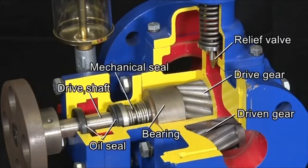Shown here are the main parts of the gear pump: the drive shaft, drive gear, driven gear, bearing, mechanical seal, oil seal and relief valve.